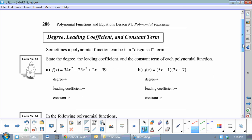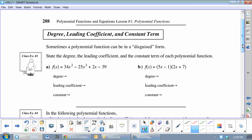The next one. Let's start looking for the degree, leading coefficient, and the constant term. Now, this one. This is the biggest one. So, it's degree 3. Leading coefficient, negative 25. Constant, negative 39.